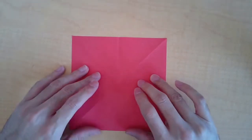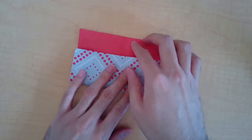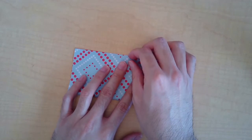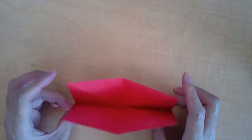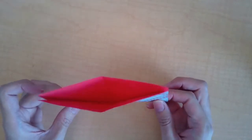You're going to turn it 90 degrees and fold it again. Then we're going to grab the two edges here.